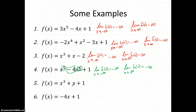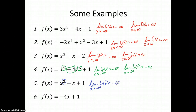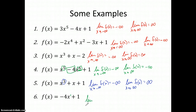Let's look at the next one: we have a cube, so it looks just like number three. The limit as x approaches negative infinity is going to be negative infinity, and the limit as x approaches positive infinity is going to be positive infinity. For the last one, the degree is one — so it is an odd degree with a negative leading coefficient. With odd degree and a negative leading coefficient, these end behaviors are going to be opposite.